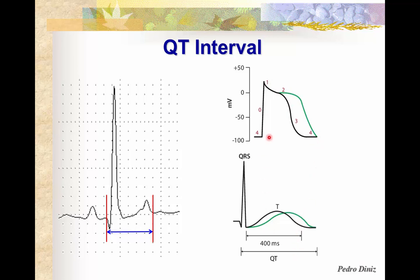Therefore, there is no way you can cause dramatic changes in the time it takes for the cells to depolarize and repolarize. It's impossible to have dramatic changes in the QT interval from beat to beat. If you have an increase in the repolarization phase of cardiac cells, you get a prolonged QT interval, which happens in some diseases or with some medications. However, you will not see in a dog or cat drastic changes in the PR interval from one beat to the next. Both the PR interval and the QT interval tend to be constant.